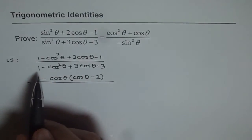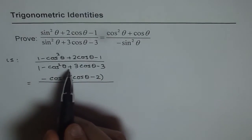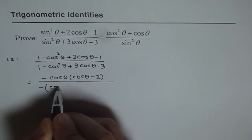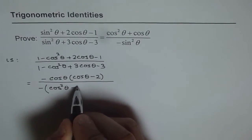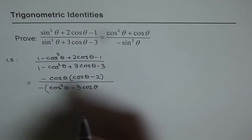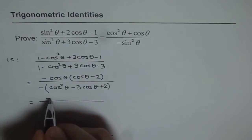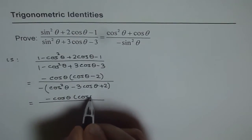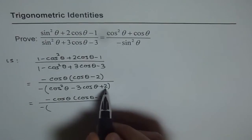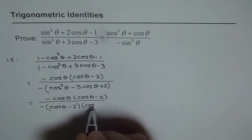In the denominator, let me rewrite this. 1 − 3 is −2, and we get −cos²θ + 3cosθ. Let me rewrite this taking minus as a common factor, and then we will factor in the next step. We get cos²θ, this becomes −3cosθ, and since we took minus outside, minus 2 becomes plus 2. Now we will factor the denominator. In the numerator we have −cosθ × (cosθ − 2), and in the denominator we need product of 2 and sum of −3, so we can write this as (cosθ − 2)(cosθ − 1).